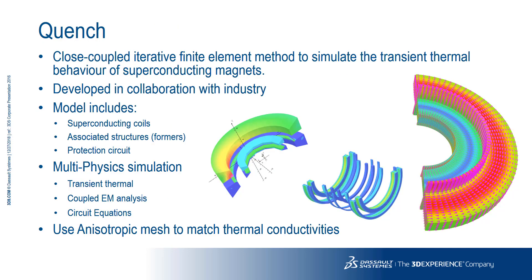The Opera quench module computes the temperature rise of a superconducting magnet during a quench, including the transition to being resistive as the quench propagates through the magnet. In this instance, we have significant anisotropy in the material properties as thermal conductivity is dominant along the winding direction, requiring specific modelling techniques for efficiency and accuracy.